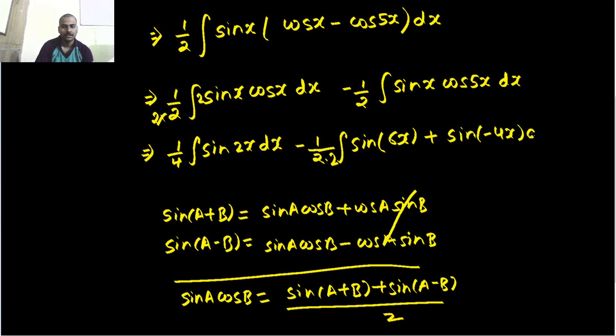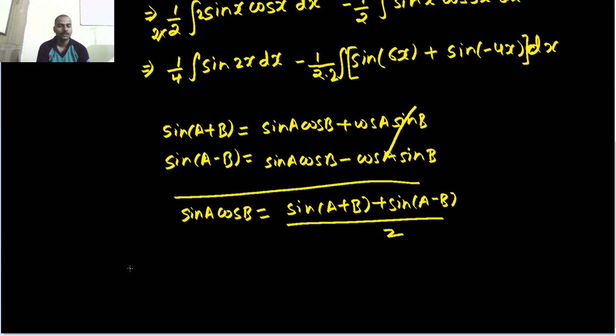And sin, when you give minus theta, it gives you minus of sin theta. So now, here you see integration of sin will be minus of cos. So minus 1 by 4 cos 2x, and you will have to divide extra by 2 because coefficient of x is 2.